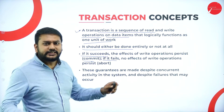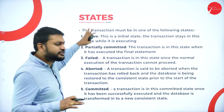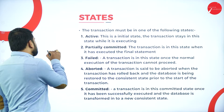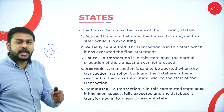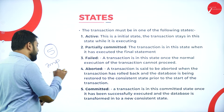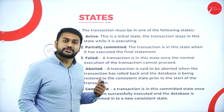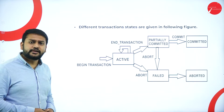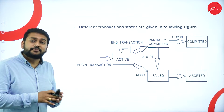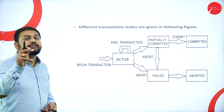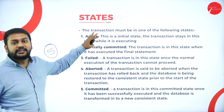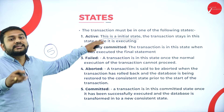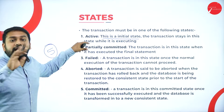Now let's understand the different states in a transaction. Basically, I have five different states, and this is very important from an exam point of view. The first state is the active state — this is the beginning, the initial state of the transaction. The transaction stays in this state while it is executing. That is what I will call the active transaction state.